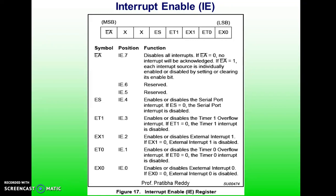Let me discuss the steps for enabling an interrupt. First, bit D7 of the IE register must be set high to allow the rest of the register to take effect. If EA equals 1, interrupts are enabled and will be responded to if their corresponding bits in IE are high. If EA equals 0, no interrupt will be responded to even if the associated bit in the IE register is high. So to access any interrupt, you must first enable the D7 bit of the IE register.